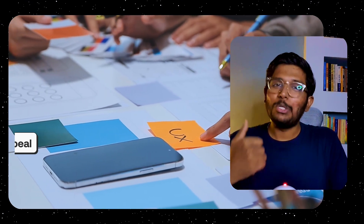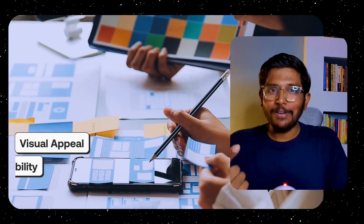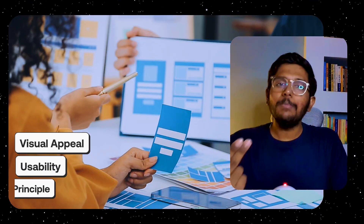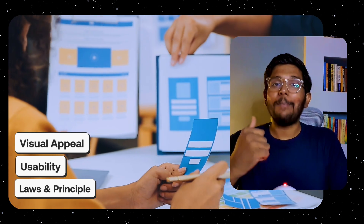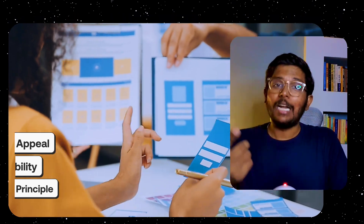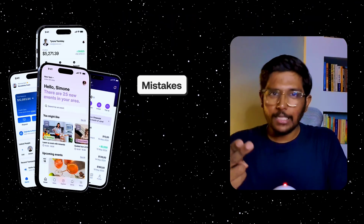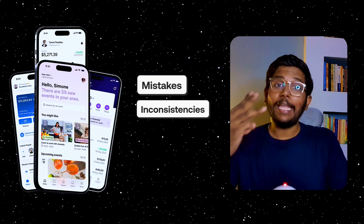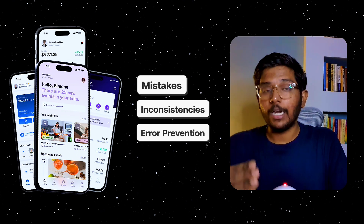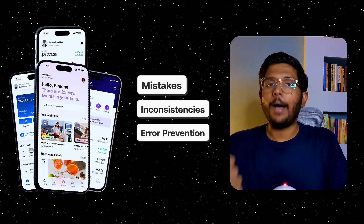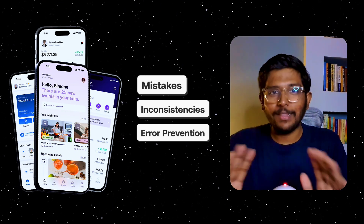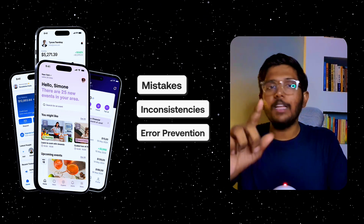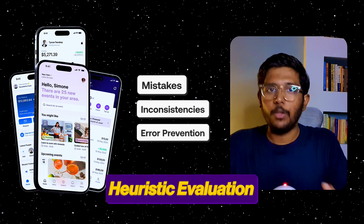We have to examine the visual appeal, usability, laws and principles. We have to note the mistakes, inconsistencies, and error prevention issues. We have to note the fix. We have to note the fact that this is the Heuristic Evaluation.